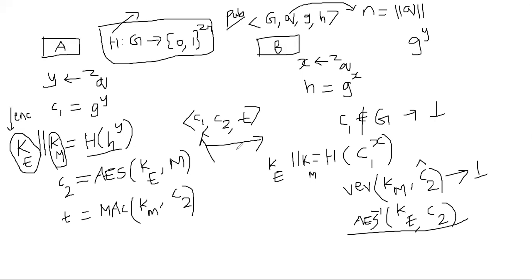This is G power X. The attacker also knows H because H is public. H is nothing but G power X. So the attacker knows G power X, G power Y. But we assume that it's difficult to compute G power XY. If we assume like that, then the scheme is secure from a chosen ciphertext perspective.